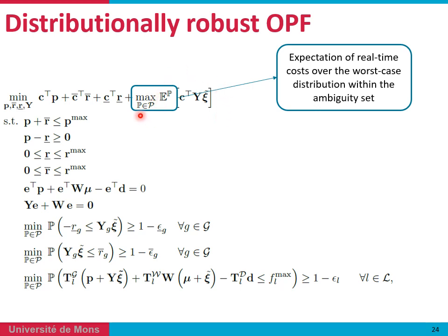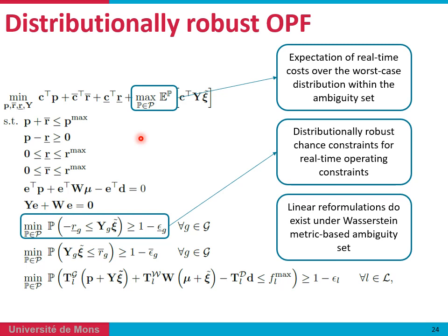We select the distribution P inside our ambiguity set that corresponds to the one that will most affect our costs. With the same idea, we can introduce distributionally robust chance constraints, which select the worst-case distribution — the one that will most affect the probability of our constraint being verified.